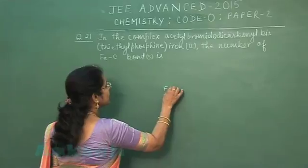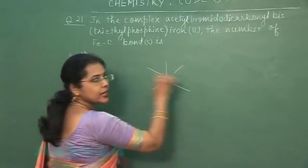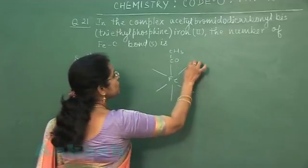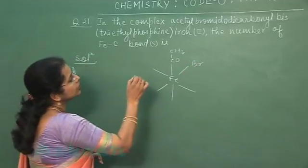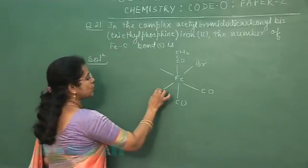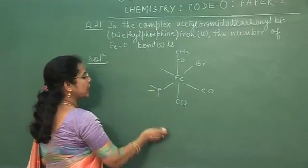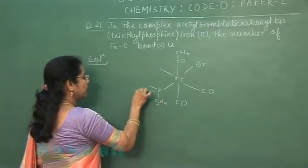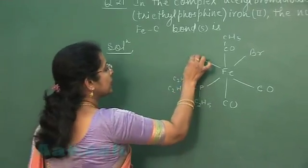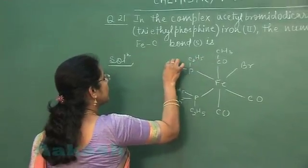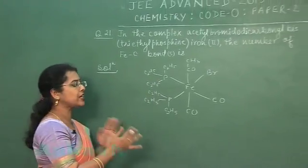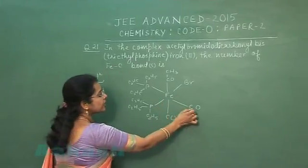This is a complex of iron bonded to 6 ligands. The ligands are: acetyl (COCH₃), bromido — meaning one ligand is bromine — dicarbonyl (CO, CO), and bis(triethylphosphane), where phosphane has hydrogen atoms replaced by ethyl groups. One ligand is P(C₂H₅)₃ and another is also P(C₂H₅)₃. This is the structure of the compound and we can clearly see there are three iron-carbon bonds.